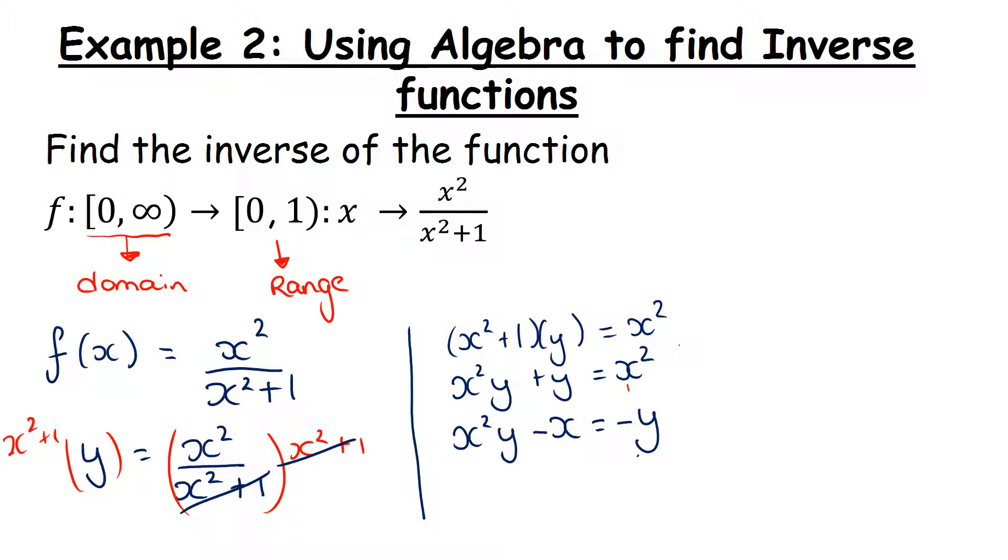We can see for both terms there's an x squared common. So we'll say x squared bracket y minus 1 equals minus y. Now we can divide both sides by y minus 1. These pieces will cancel, leaving us with x squared equals minus y over y minus 1.